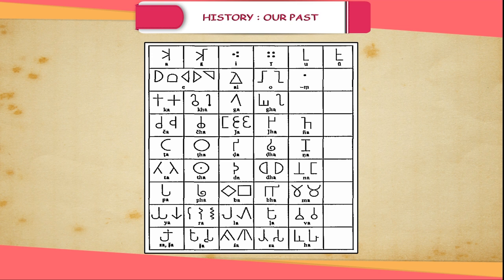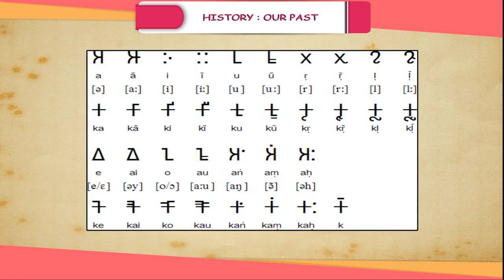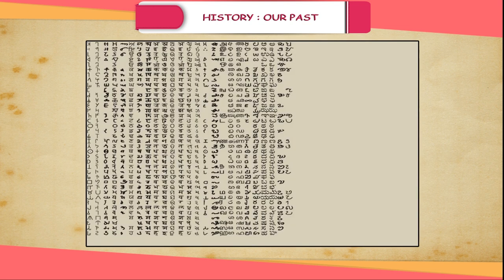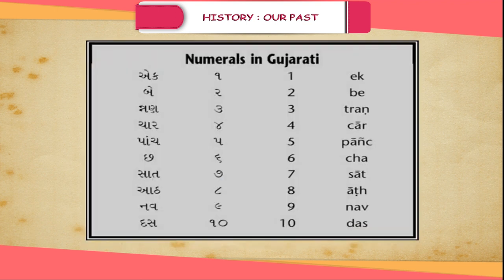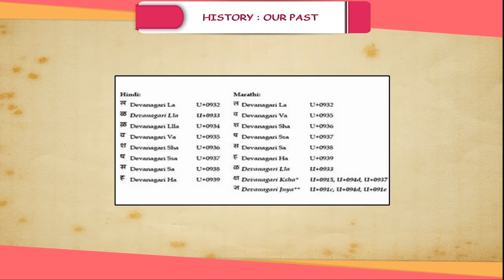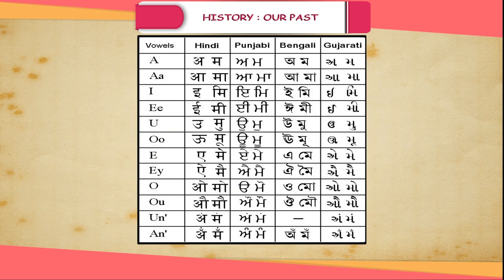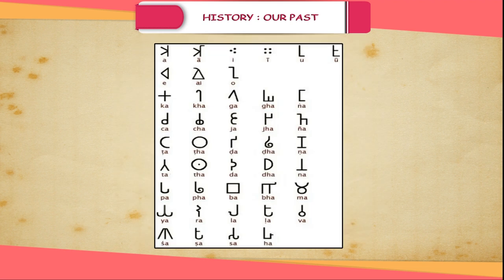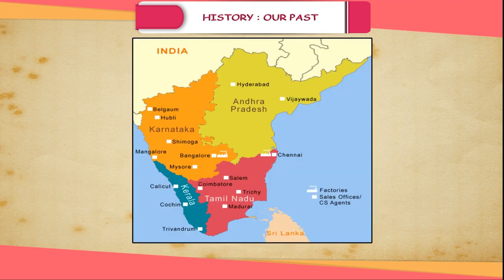In the inscriptions of the 3rd century BCE, two types of Brahmi — the northern and the southern — may be distinguished in writing. From the northern script, Devanagari along with regional scripts like Gujarati, Marathi, and Punjabi developed, while the southern variety of Brahmi led to five types of scripts, all now used in South India.